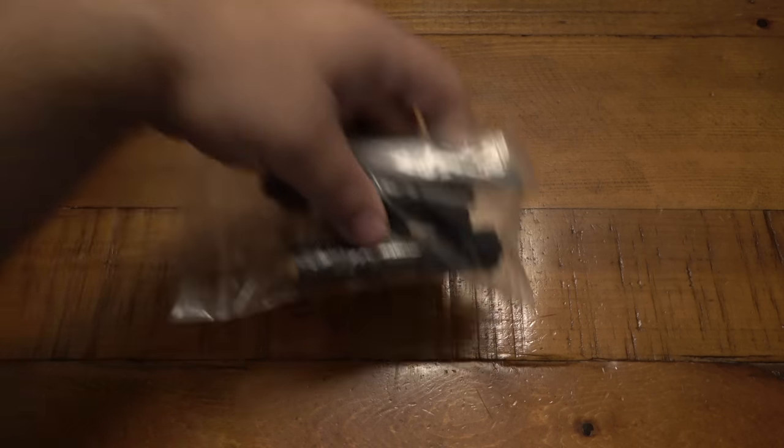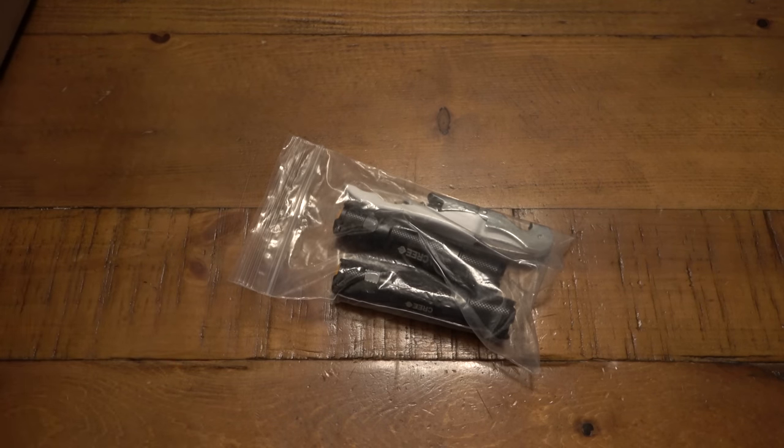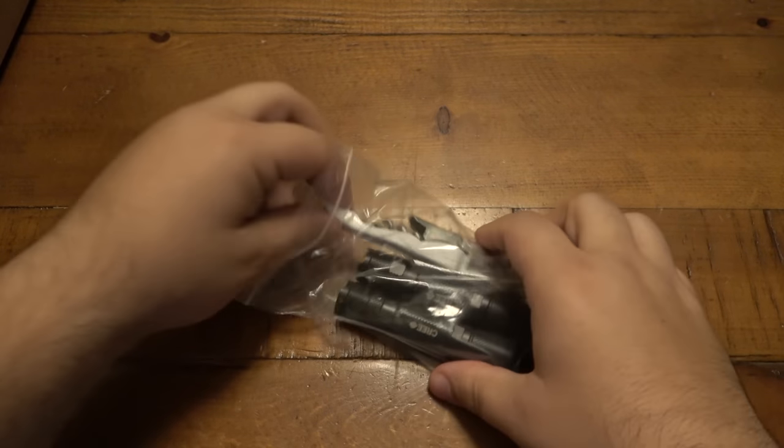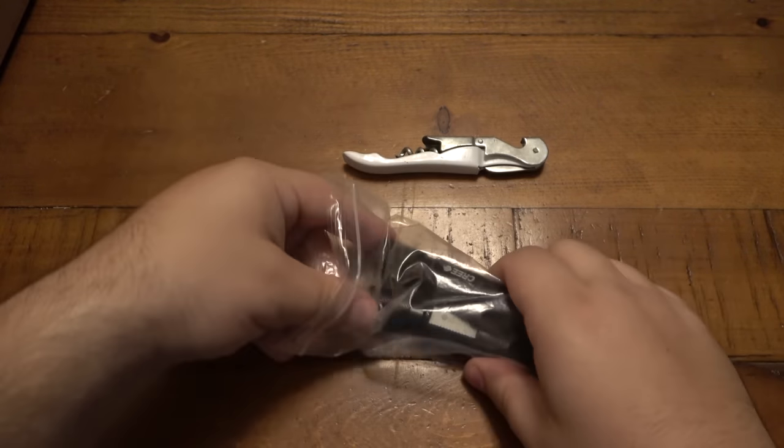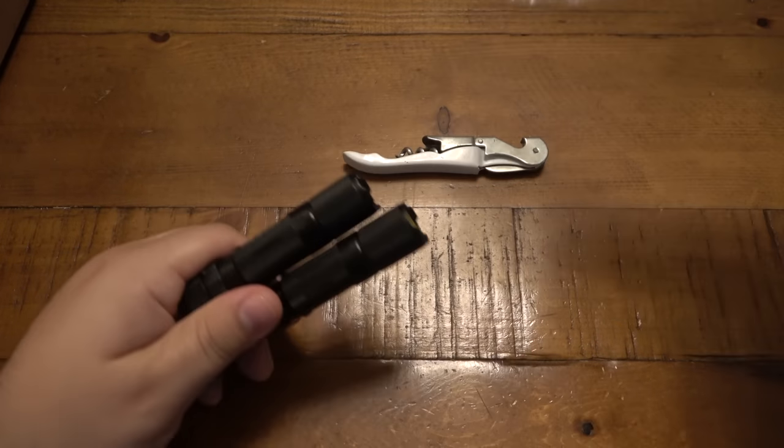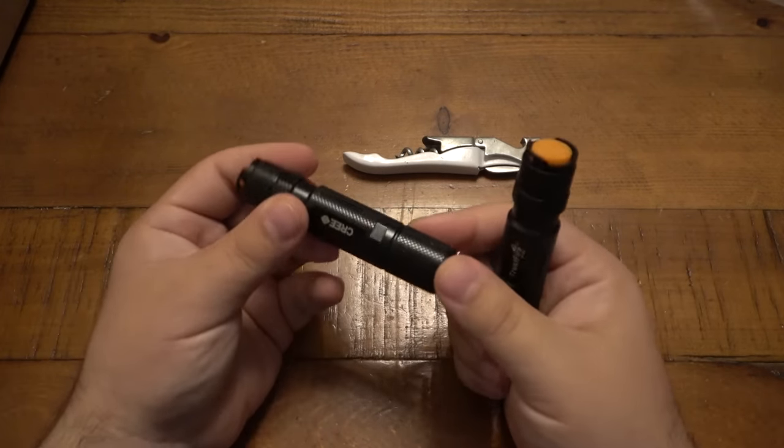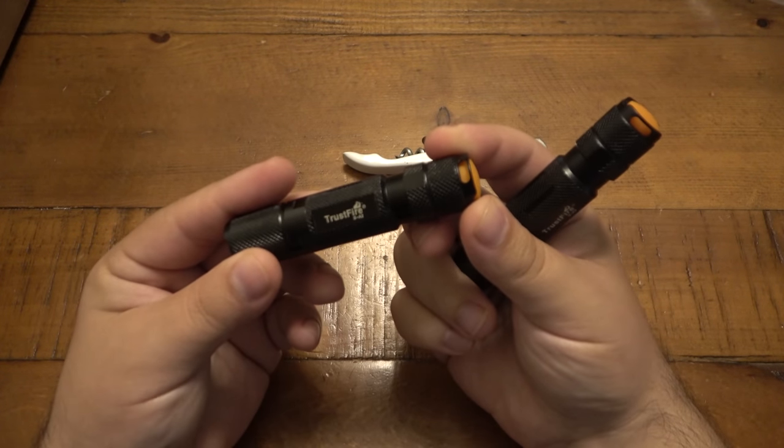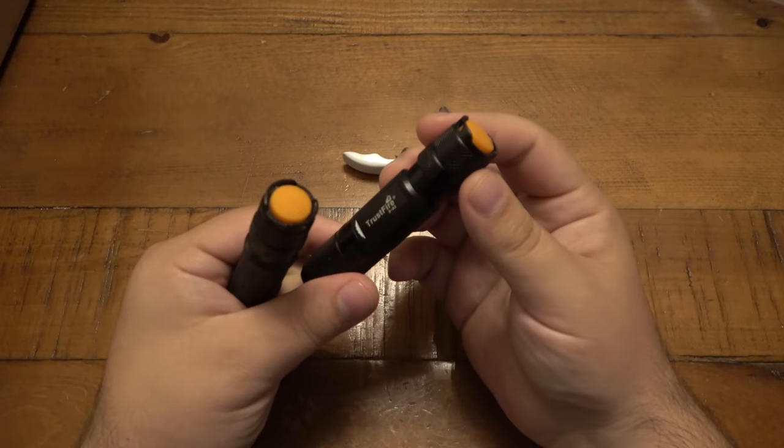Then we have some extras here, which is really nice surprise. I wasn't expecting these at all from the trade. We got a cool wine tool, or a bartender tool I should call it, and we have two flashlights. These are Trust Fire, says Z8-A2. I think this one's the same, yeah.